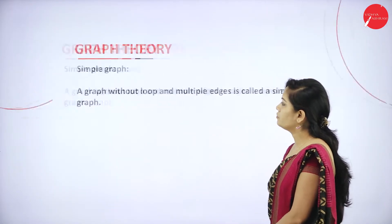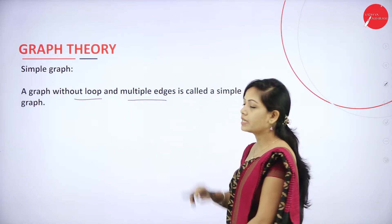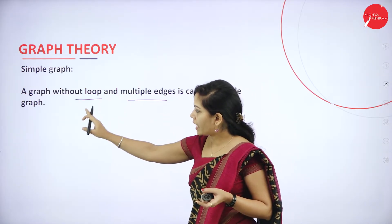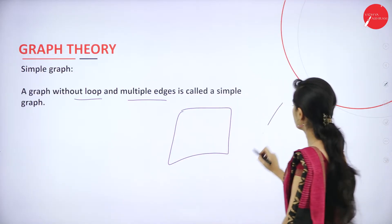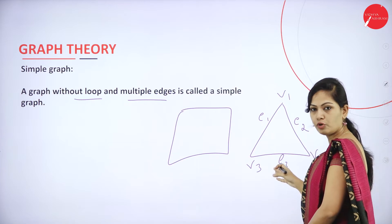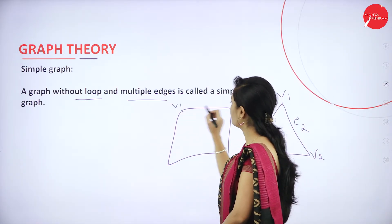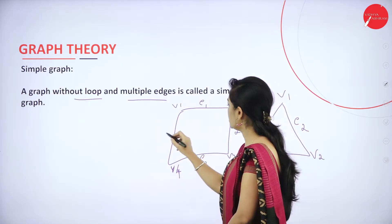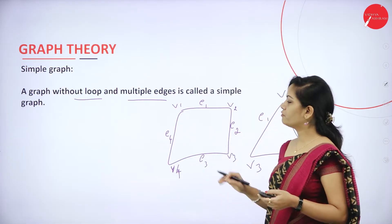Next is the simple graph. A graph without loops and without multiple edges is called a simple graph. For example, with vertices V1, V2, V3 and edges E1, E2, E3 — there are no loops and no multiple edges, so this is a simple graph. Another example with V1, V2, V3, V4 and edges E1, E2, E3, E4 — no loops and no multiple edges, so it is also a simple graph.